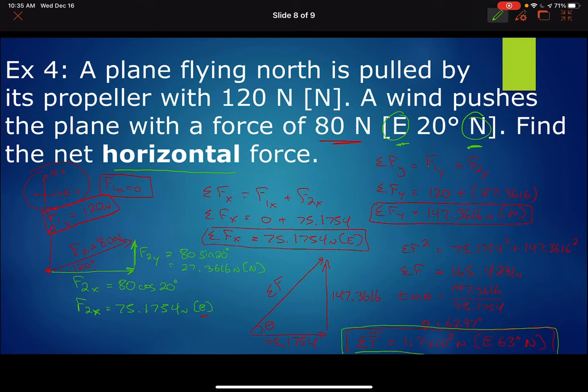The boxed values along the way are intermediate answers, not the final answer. That's how we find net force — sometimes it's straightforward like the water bottle example, and sometimes we need to use the component method like we did here for the plane. We're just adding forces together.